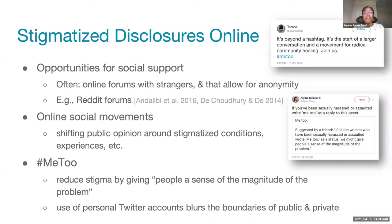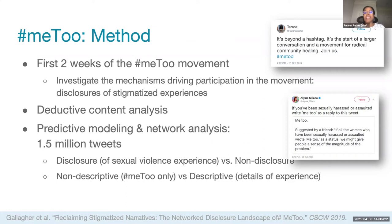Through these tweets, a goal of the movement has been to give people a sense of the magnitude of the problem. This movement has functioned as a direct challenge and attempt to dismantle stigma surrounding experiences of sexual violence and disclosures of those experiences. Interestingly, in comparison to anonymous online forums like Reddit, Me Too blurs boundaries between public and private by enabling people to share experiences publicly through accounts that are often personally identifiable to a varied network of followers. My collaborators and I have been investigating the mechanisms driving the Me Too movement, analyzing a sample of tweets and replies from the first two weeks of the movement.